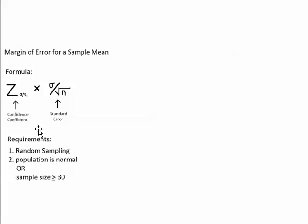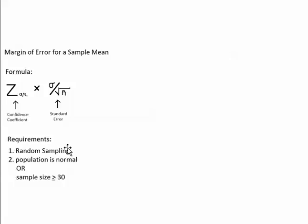When you calculate the margin of error, there are requirements you have to follow, otherwise the formula will give an incorrect answer. For a sample mean, the rules are: you need to be taking a random sample, and either the population you're sampling from has to have a normal distribution, or your sample size has to be at least 30.